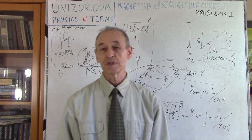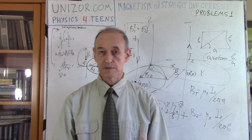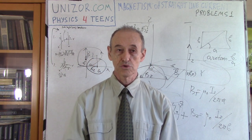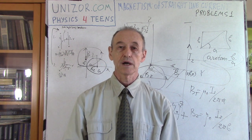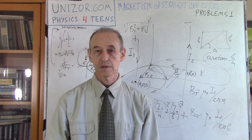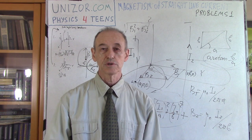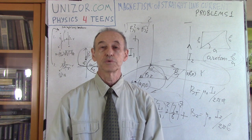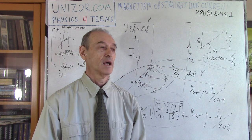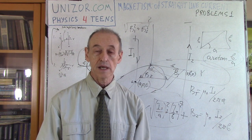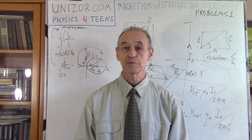I suggest you read the notes for this lecture on unizor.com. Go to the Physics for Teens course, choose the Electromagnetism subject, then find Magnetism and Electric Current where these problems — Problem 1 — are located. There are nice pictures and textbook-style explanations. That's it for today. Thank you very much and good luck.